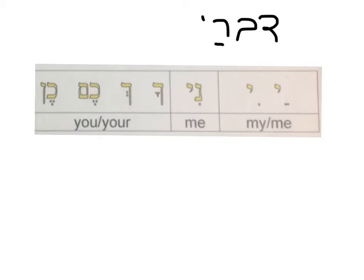Another example: 'kavod,' which means 'honor.' If you add 'ni' at the end, it becomes 'kevodni,' meaning 'my honor' or 'honor me.' The other suffixes work similarly with the words they apply to. And now, a little song to help us remember them.